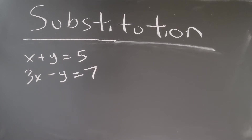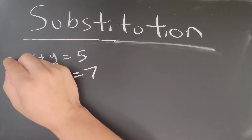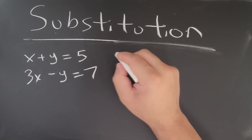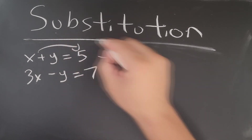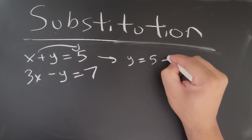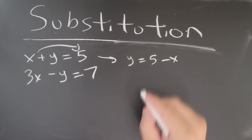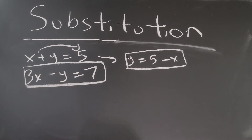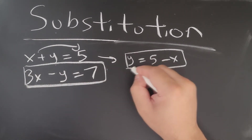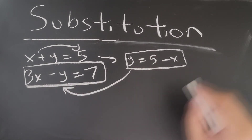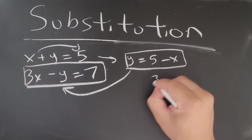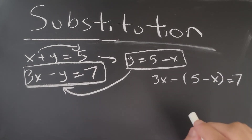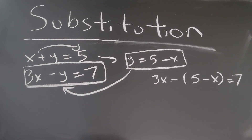Again, we can rearrange one of the equations. The easier one to isolate would be the first one — we can isolate y by bringing x over to the other side, so it becomes y equals 5 minus x. That's equation one rearranged, and the other equation stays as is. Now I'm going to take this y and substitute it into the second equation. When I do that, I'm left with that substituted expression.